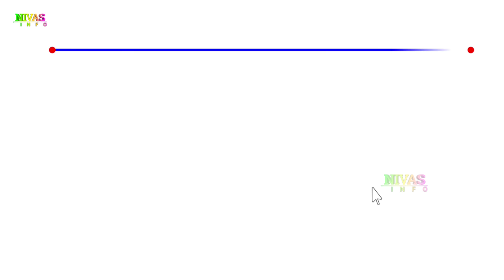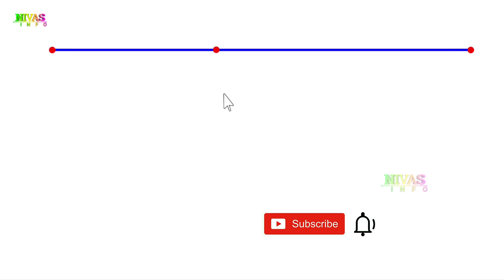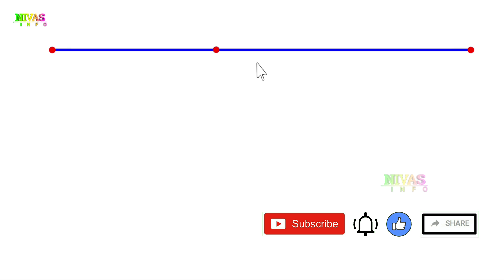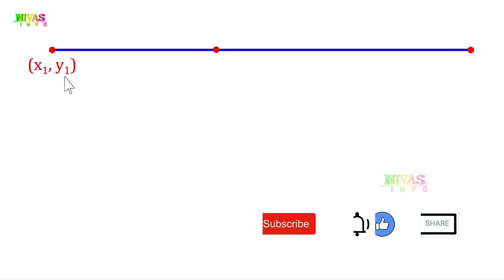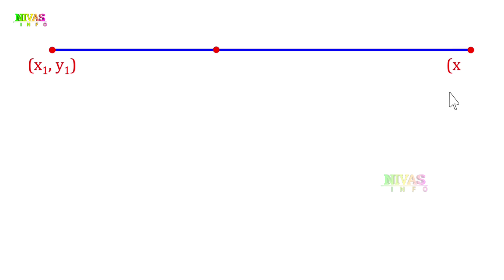Here we have a line segment. We are going to divide this line segment into two segments. The first point is x1 and y1, and the second point is x2 and y2. We need to find out the dividing point, which is x and y — that is, the x value and the y value.